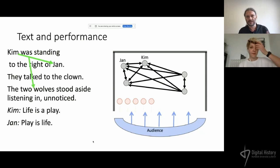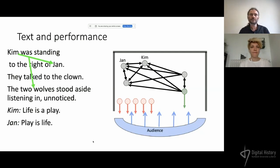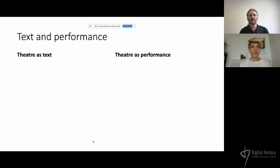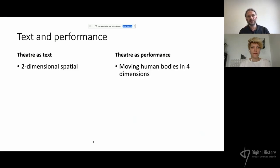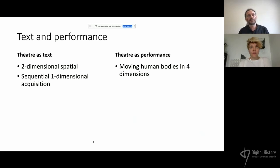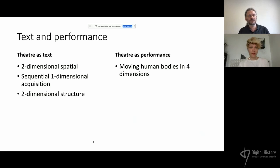You also have categories like the classic Greek choir and direct addressing, and so on. These are basic categories which form some of the basis for the difference between theatre text and theatre performance. A text is two-dimensional spatial; performance is moving human bodies in four dimensions. Of course there are radio theatres and other things, but this is the common situation. The text is sequential, one-dimensional in acquisition, but the two-dimensional structure is used for structure. You can look at the structure even if you don't understand the language and recognize it as a theatre text.